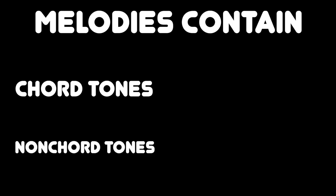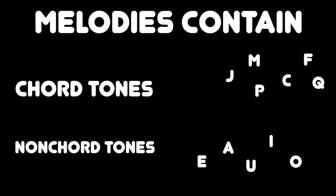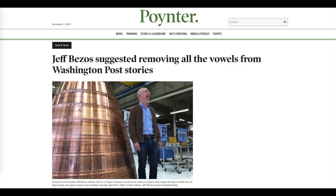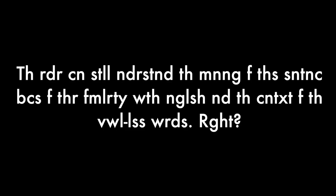Melodies contain both chord tones and non-chord tones. I think of the primary chord tones to be equivalent to consonants in English, while the embellishments are like vowels. Did you know that you can still read a sentence even with all the vowels removed? There's a great word for this: disemvoweling. Jeff Bezos once suggested removing all the vowels from articles in his newspaper, the Washington Post. The reader can still understand the meaning of a sentence because of their familiarity with English and the context of the vowel-less words.